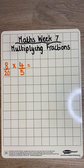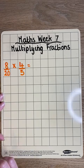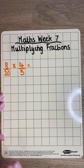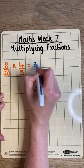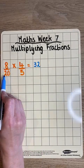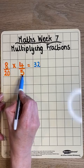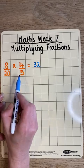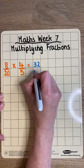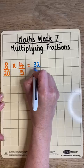Our next step then will be to put it into its simplest form. So first, let's find the answer. In this sum, it will be 8 times 4 is 32, and 20 times 5. I know that 2 times 5 is 10, so 20 times 5 must be 100. That's my denominator.